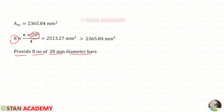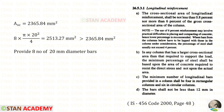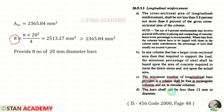Let us open the codebook page number 48. The minimum number of longitudinal bars provided in a column shall be 4 in rectangular columns — here we have provided 8 numbers, so we are safe. The bars shall not be less than 12 millimeter in diameter — our diameter is 20 millimeter, which is more than 12 millimeter, so here also we are safe.